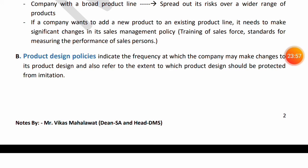Second is Product Design Policies — how often and after what time period you change your product's design or make modifications. For example, Maruti launched the Maruti 800 in India in 1983 and did not introduce many variations until 2000. After Hyundai and other foreign companies like Honda and Ford entered India, Maruti changed its product design policy and began introducing new products and facelift versions every one to two years — for example, the Swift launched in 2007 had its design changed in 2016–17 and again more recently.